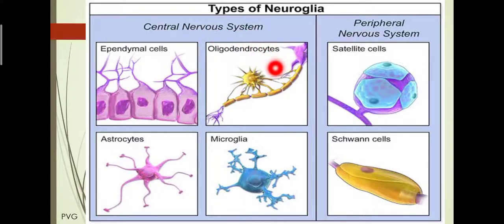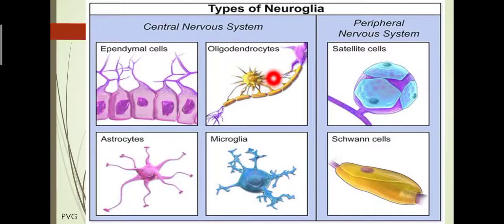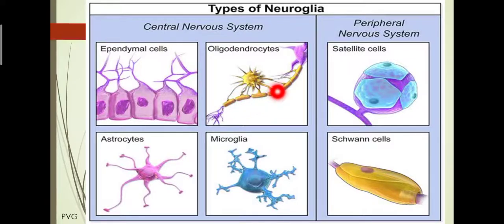First we study the neuroglial cells of the central nervous system. The first is the oligodendrocyte cell. These cells have few branches. Branches originate and mainly form the myelin sheath, which forms white matter.